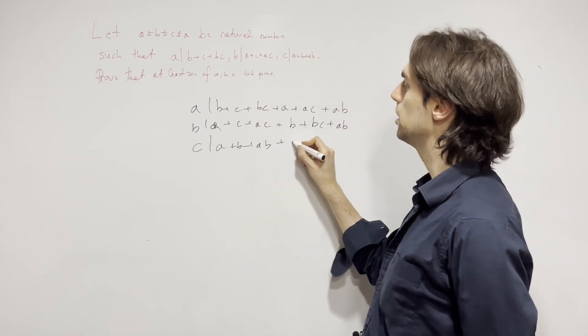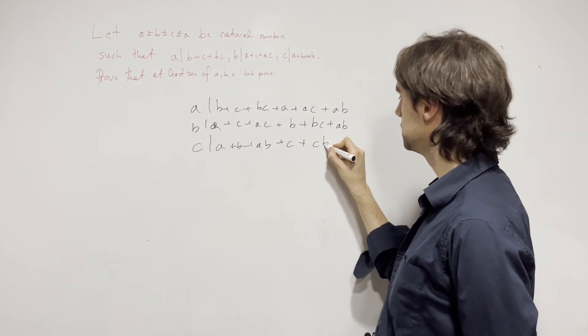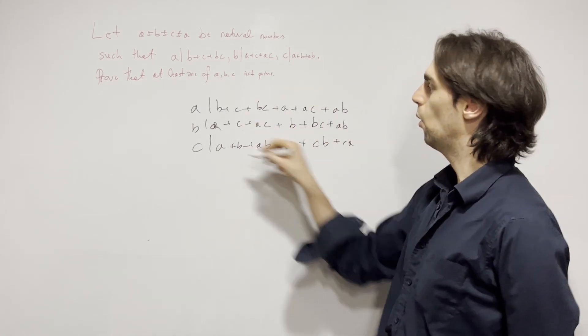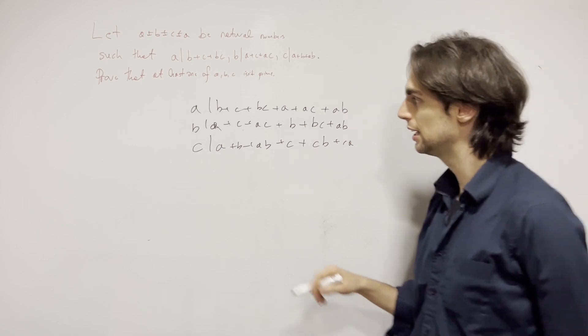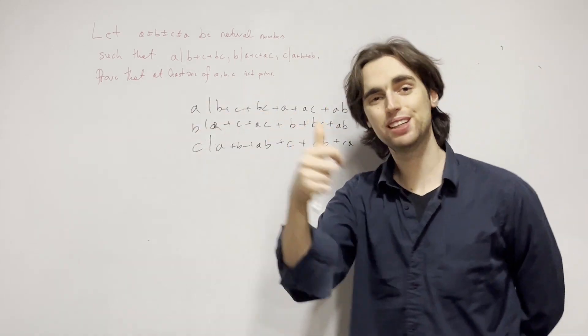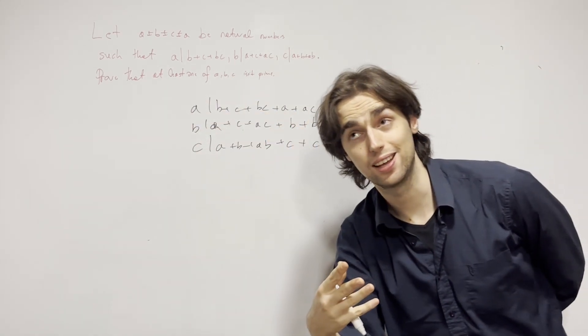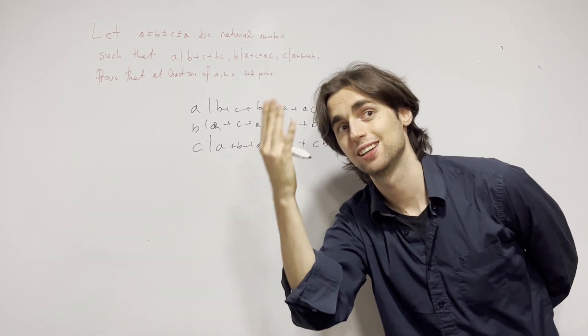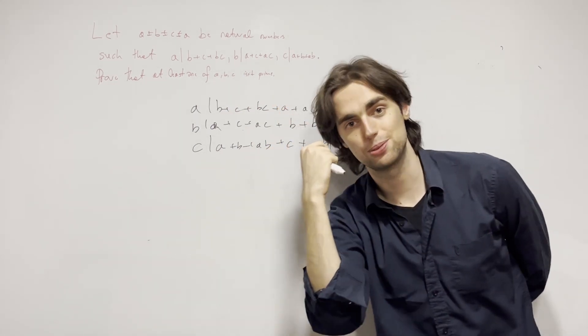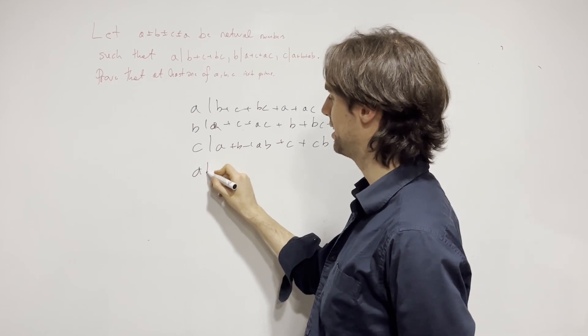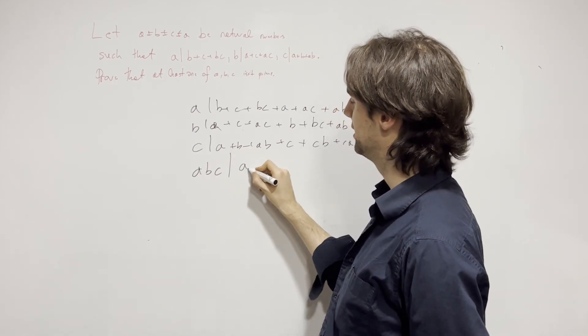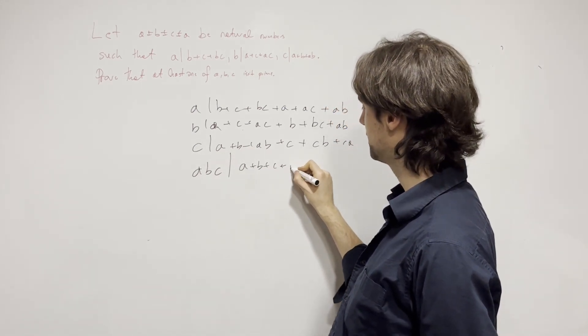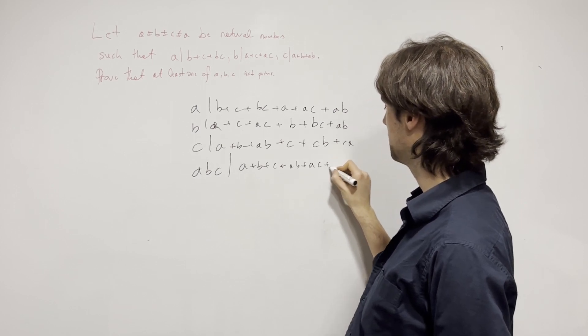So, what am I going to do? I'm going to add plus AB and plus AB. And I'll have C divides A plus B plus AB. And I can also add, it divides this, plus C plus CB plus CA. All of these things are the same thing. And so, it follows because AB and C are prime, and because they're different, they're relatively prime. I can multiply them through, and I'll get that ABC divides A plus B plus C plus AB plus AC plus BC.